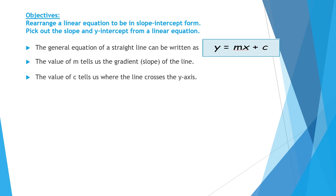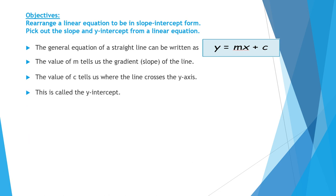The value of c, which is the constant number in the equation, tells us where the line crosses the y-axis. This is called the y-intercept. So c is the constant number and it tells us where the line crosses the y-axis. m is the coefficient of x — it's the number that comes just before the x in the equation y equals mx plus c, and it tells us the slope or the steepness of the line.